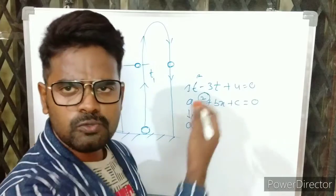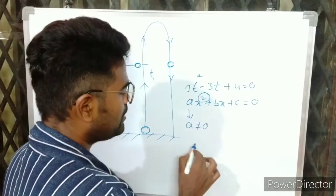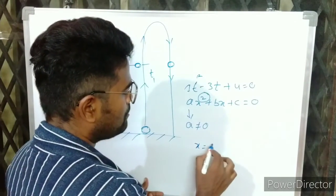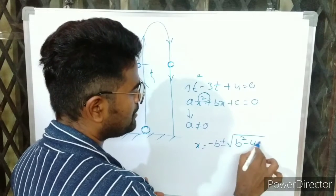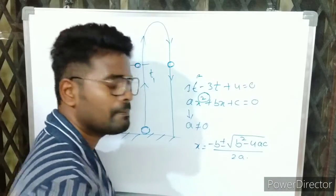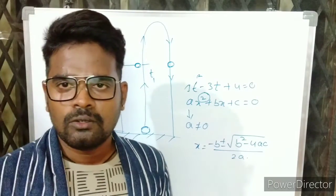What is that? Roots for this quadratic equation. That is x equals minus b plus or minus square root of b square minus 4ac by 2a.